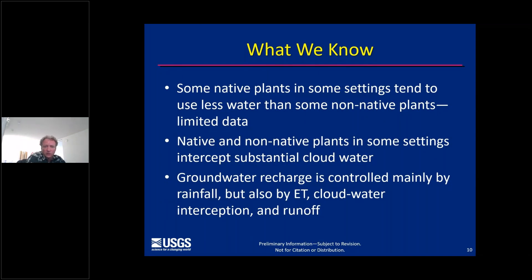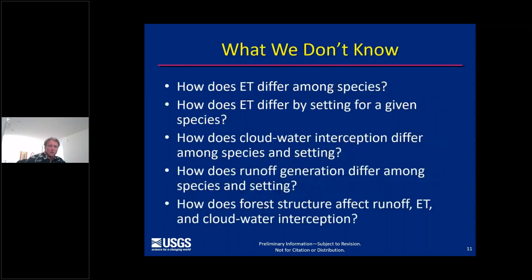We do know that some native plants in some settings tend to use less water than some non-native plants, although this is based on limited data. We also know that native and non-native plants in some settings intercept substantial cloud water. And groundwater recharge is controlled mainly by rainfall, but also by ET, cloud water interception, and runoff. What we don't know is how species and settings affect these rates — for example, how does ET differ among species, and how does it change with different settings? The same goes for cloud water interception, runoff generation, and forest structure.